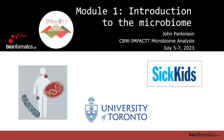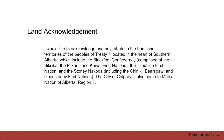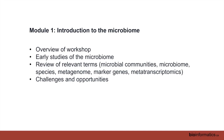This first module is really just to introduce and orient ourselves to the actual workshop. My name is John Parkinson. First thing I need to do is a land acknowledgement: I'd like to acknowledge and pay tribute to the traditional territories of the peoples of Treaty 7, located in the heart of southern Alberta, which include the Blackfoot Confederacy comprised of the Siksika, the Piikani, and Kainai First Nations, the Tsuut'ina First Nation, and the Stoney Nakoda including the Chiniki, Bearspaw, and Goodstoney First Nations. The City of Calgary is also home to Métis Nation of Alberta Region 3.